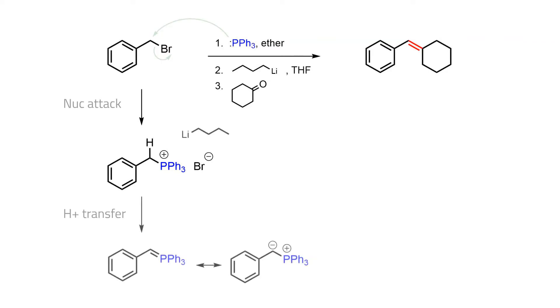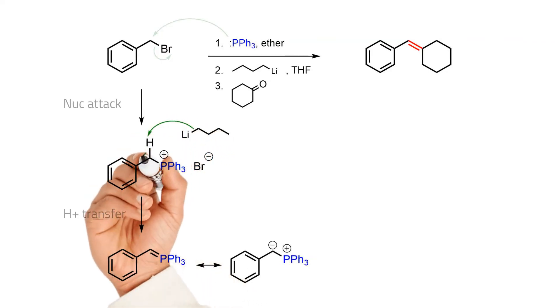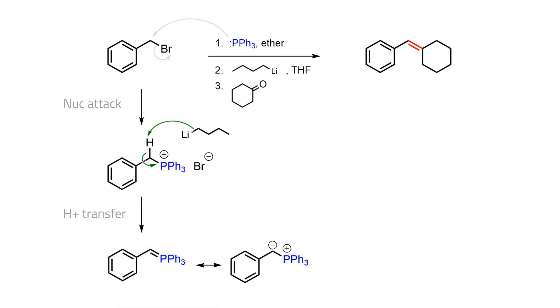The electron-withdrawing ability of the positive phosphorus now makes the alpha proton somewhat acidic, so a strong base is able to remove it. This gives the nucleophilic ylid that is stabilized as described by the two resonance structures.